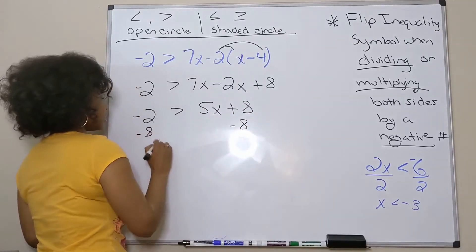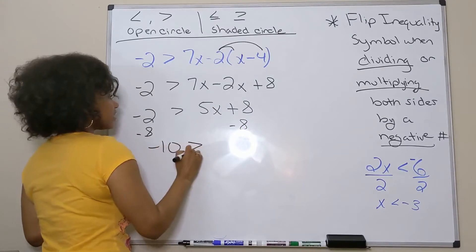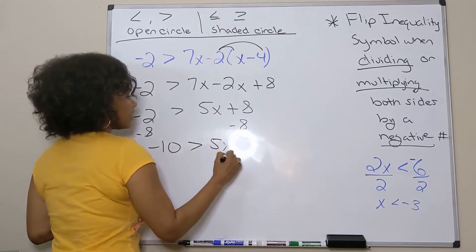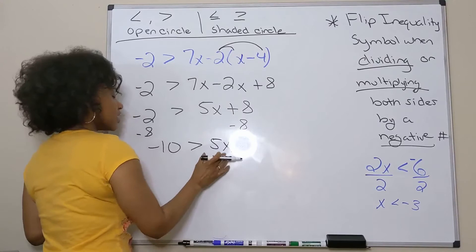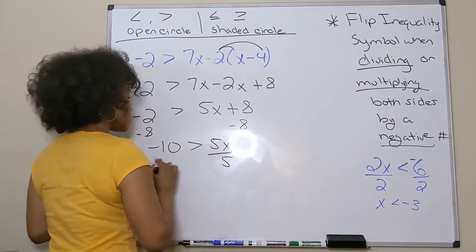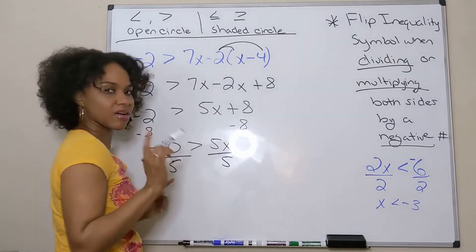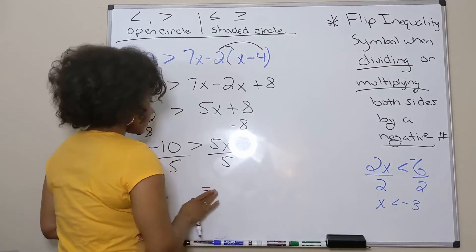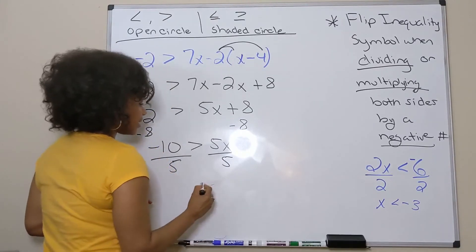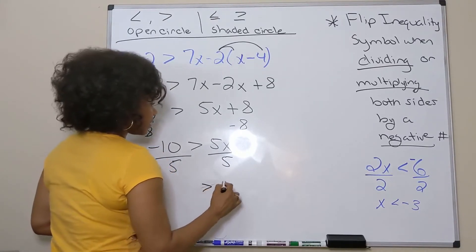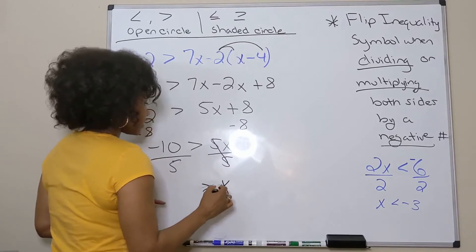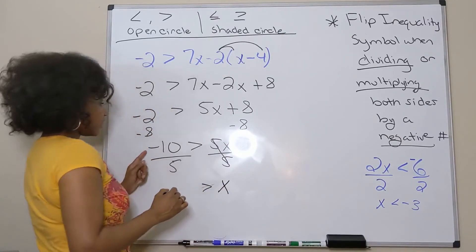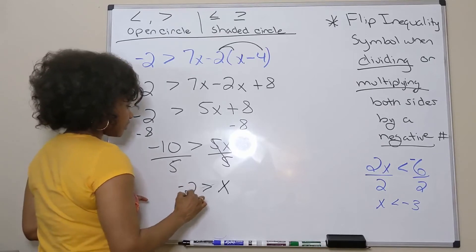Now I'm left with just a two-step inequality. Subtract 8, and I'm left with negative 10 is greater than 5x. So I'm dividing both sides by a positive 5. In this case, I'm not going to flip the inequality symbol. So that gives x is less than negative 10 divided by 5, which is negative 2.